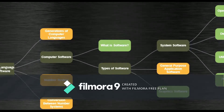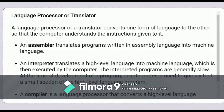Next one is language processor or translators. You have already learned about computer languages — machine language, high level language, assembly language, etc. A language processor or translator converts one language into another so that the computer understands the instructions given to it. The first translator is an assembler. An assembler translates programs written in assembly language into machine language, and machine language to assembly language — both translations are done by the assembler. If you have written an instruction in assembly language, it converts those instructions into machine language so that the computer understands it.